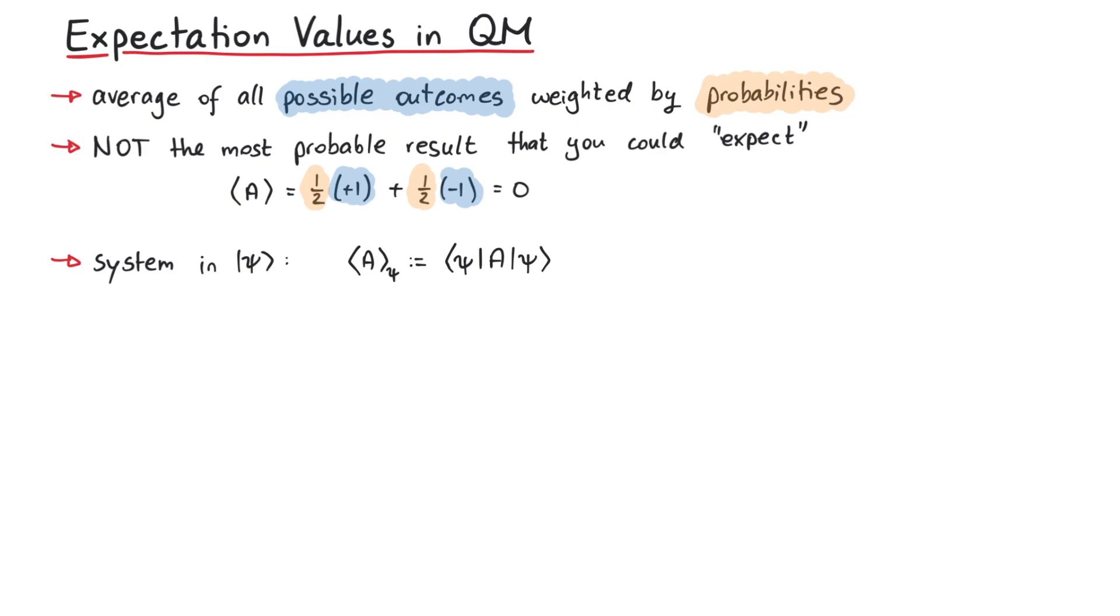If we work in the position basis, where the wave function is given by projecting the ket state psi onto the position basis, we can also write down the expectation value of A using an integral like this. Note that it is important that the operator stands between the two wave functions. This is important for instance if the operator contains a derivative.